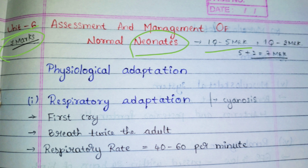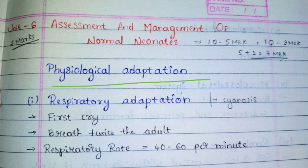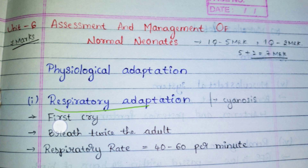The first topic is physiological adaptation — that is, how the baby changes itself physically. Inside the womb the environment is one way; outside the womb it is another. We will see how the baby adapts to it. The first system is respiratory. Inside the womb the baby doesn't breathe and the lungs don't work mechanically, so after birth the baby's actual respiratory system will begin to function.